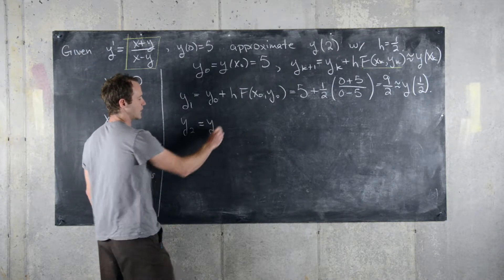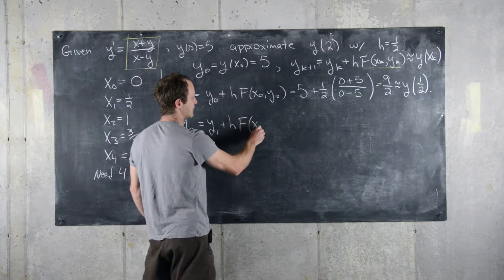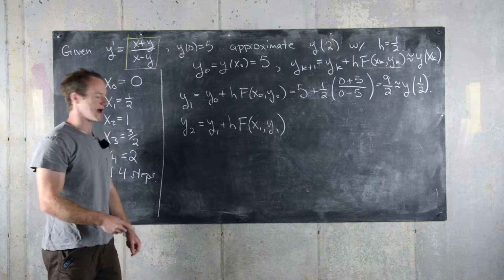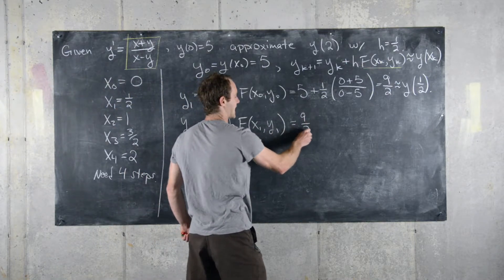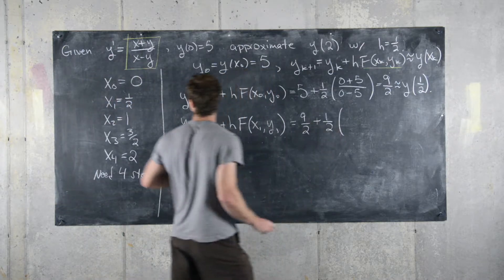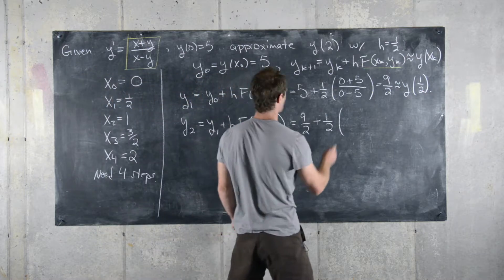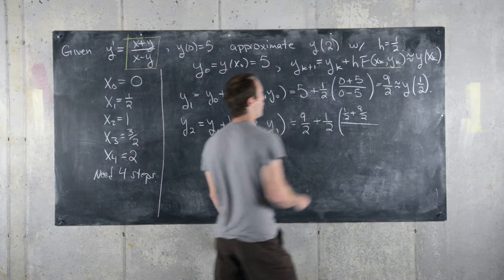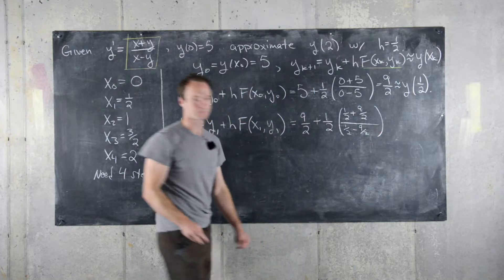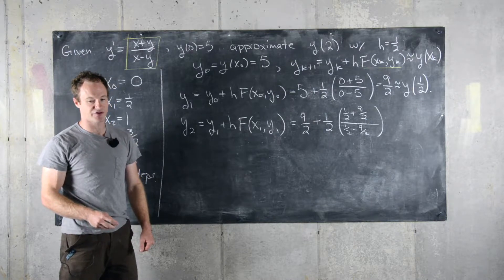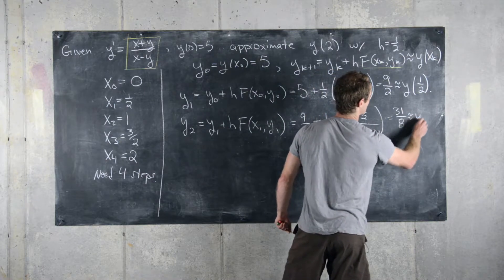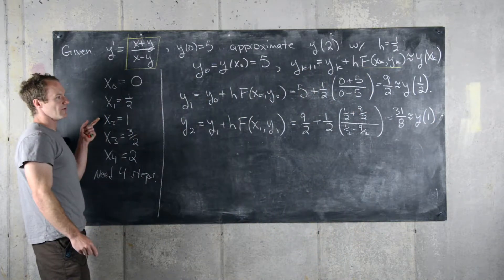Next, y_2 = y_1 + h * f(x_1, y_1). Here x_1 = 1/2 and y_1 = 9/2, so that gives us 9/2 plus (1/2) times (1/2 + 9/2) / (1/2 - 9/2). Working that out gives 31/8, which is approximately equal to y(1).